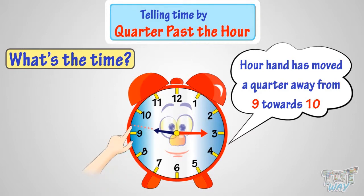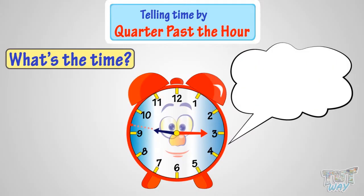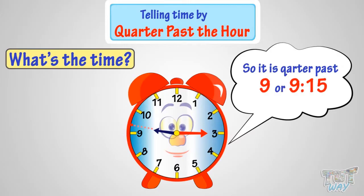Look at the dotted line. That's pointing exactly a quarter away from nine towards ten. So it is quarter past nine, or 9:15, as you say in a digital clock.